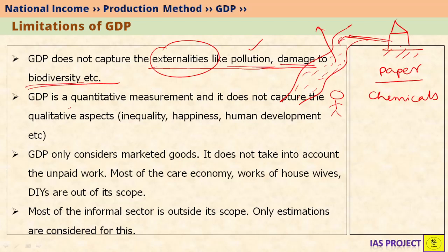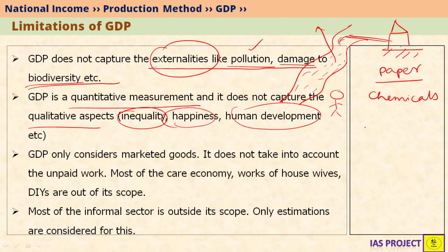GDP is a quantitative measurement — it does not measure qualitative aspects like inequality, happiness, or human development. GDP gives us a number; for example, India is a 12 trillion dollar economy in terms of purchasing power parity. But this does not tell us whether people are poor or rich, what the inequality is, how rich the rich are, how poor the poor are, what the education levels are, or what healthcare is available to Indians. It gives no information on qualitative aspects of the economy.